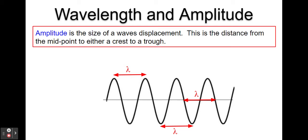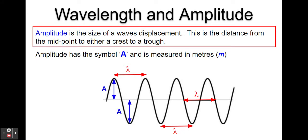Amplitude has to do with the size of the displacement, how far the particles within the wave vibrate. We can measure it by the distance from the midpoint of the wave to either the crest or the trough. Amplitude has the symbol capital A and is measured in meters.